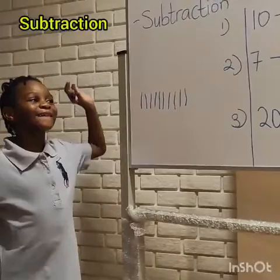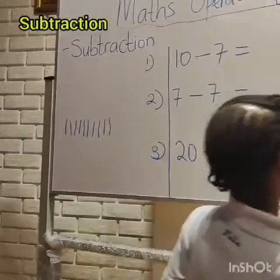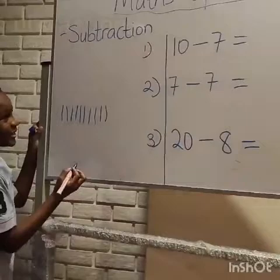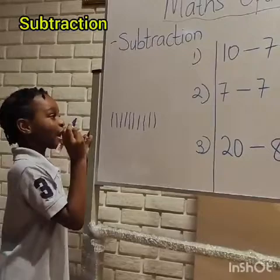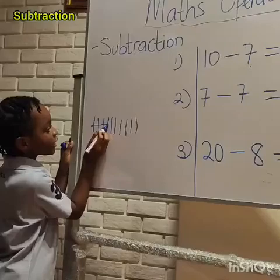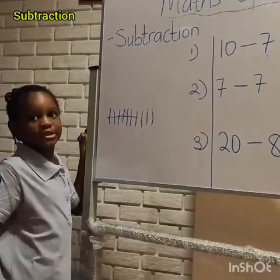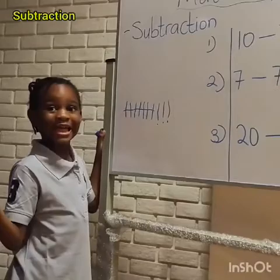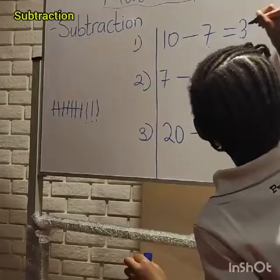Now let's go to the equation. We have to take out seven. Can you see seven here? One, two, three, four, five, six, seven. How much more is there? Let's count: one, two, three. Three is left. So we go to our equation right here and we write three. And it is done. So let's do more.